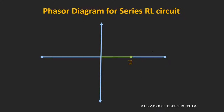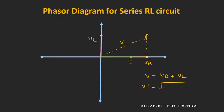For the resistor, voltage and current will be in phase. So the phasor for VR will be in phase with current I. For the inductor, the voltage will lead the current by 90 degrees, so the phasor for VL will be 90 degrees ahead of the current. The resultant voltage V will be the vector sum of VR and VL. So V equals VR plus VL, and the magnitude of this voltage V will be the square root of VR squared plus VL squared.